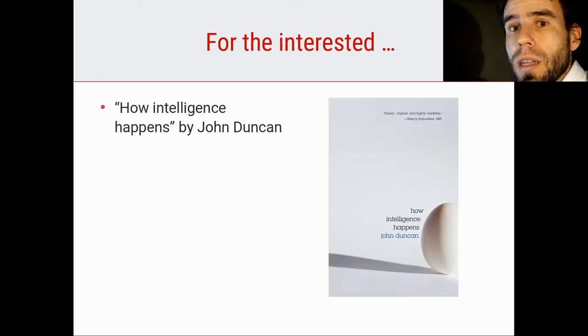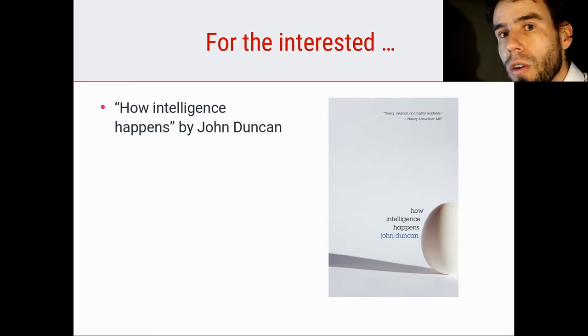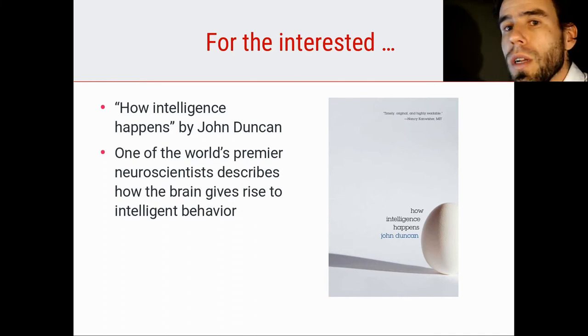Now, I always like to recommend for the interested viewer a more accessible book, a popular science book. And for this lecture, I would like to recommend How Intelligence Happens, which has been written by John Duncan. Now, John Duncan is really one of the world's best, in my opinion, neuroscientists.